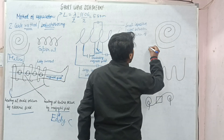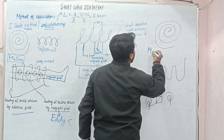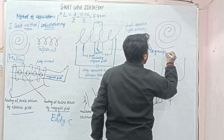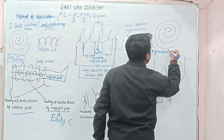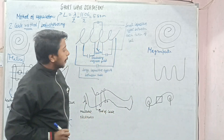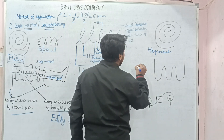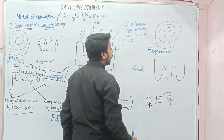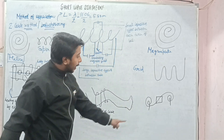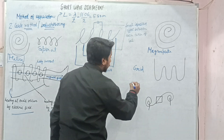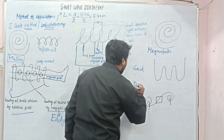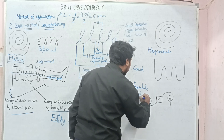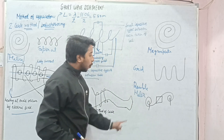This helix arrangement is also called a magna plate. There is also the grid type. Both are used for flat areas. And this one is called the double helix.